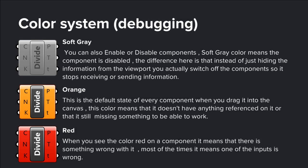You can also enable or disable components in Grasshopper. A soft gray color indicates that a component is disabled. So instead of just hiding the information from the viewport, you actually switch off the component so it stops sending or receiving information. The orange color is the default state of every component when you drag it into the canvas. This color means that the component does not have anything referenced into it or that it's still missing something to be able to work.